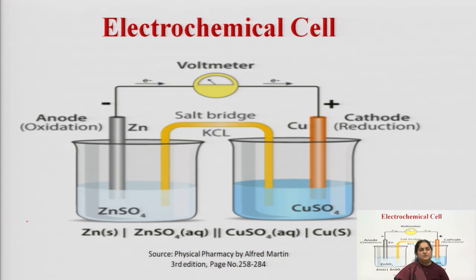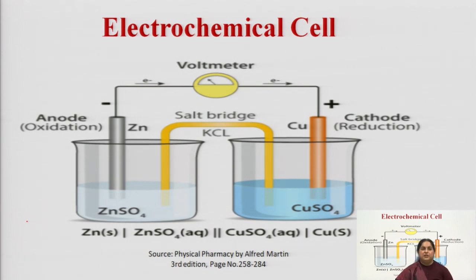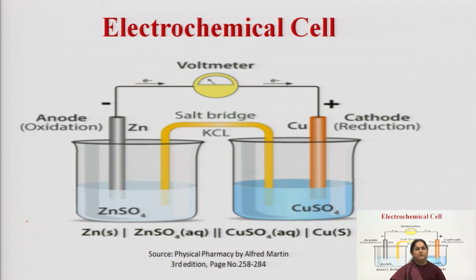pH determination is very important for the maintenance of different dosage forms so that they can be physically, chemically, and microbiologically stable to show their pharmacological action. For this determination of pH I would like to give you a brief idea of the electrochemical cell that you must have studied in your plus one and plus two classes.